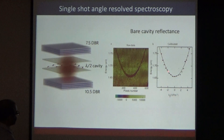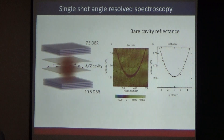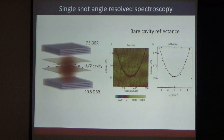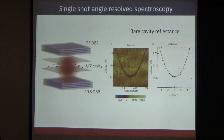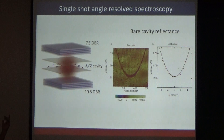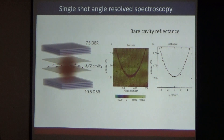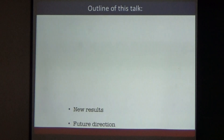Here we already know the energy; we only need to find k-parallel. The free parameter is the refractive index. If we do a fitting with the refractive index and we know the exact cavity thickness, we can feed this data. For example, we use SiO₂ with a refractive index around 1.45, and it fits nicely.